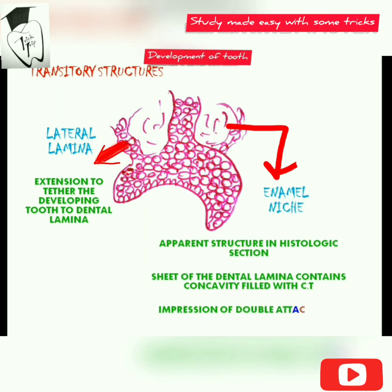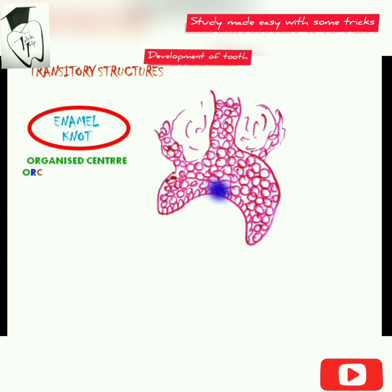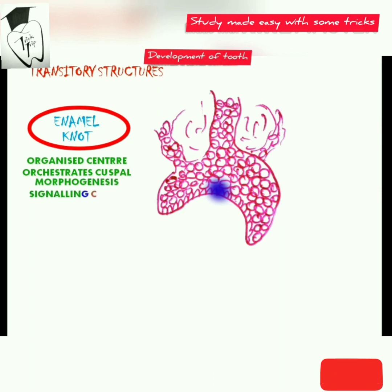The enamel knot is an organized center of densely packed cells over the inner enamel epithelium that orchestrates cuspal morphogenesis — that means they are involved in determining the initial position of the cusp tip. They also act as a signaling center. At the same time, a vertical extension of the enamel knot forms, known as the enamel cord.